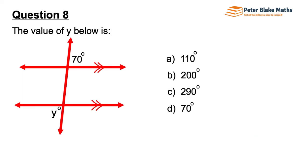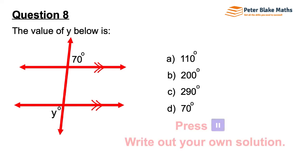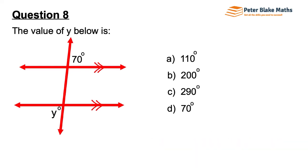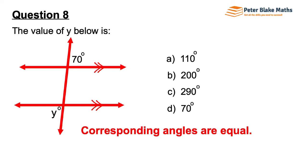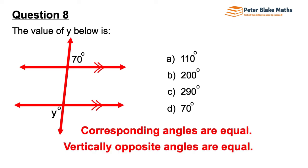Question 8. The value of Y below is? Corresponding angles are equal, and vertically opposite angles are equal. Using corresponding angles, the angle in the top right-hand corner of the bottom intersection is also 70, because 70 is in the corresponding top right-hand corner of the top intersection. That angle is diagonally opposite Y. Then, vertically opposite angles are equal, so that establishes that Y also equals 70 degrees.